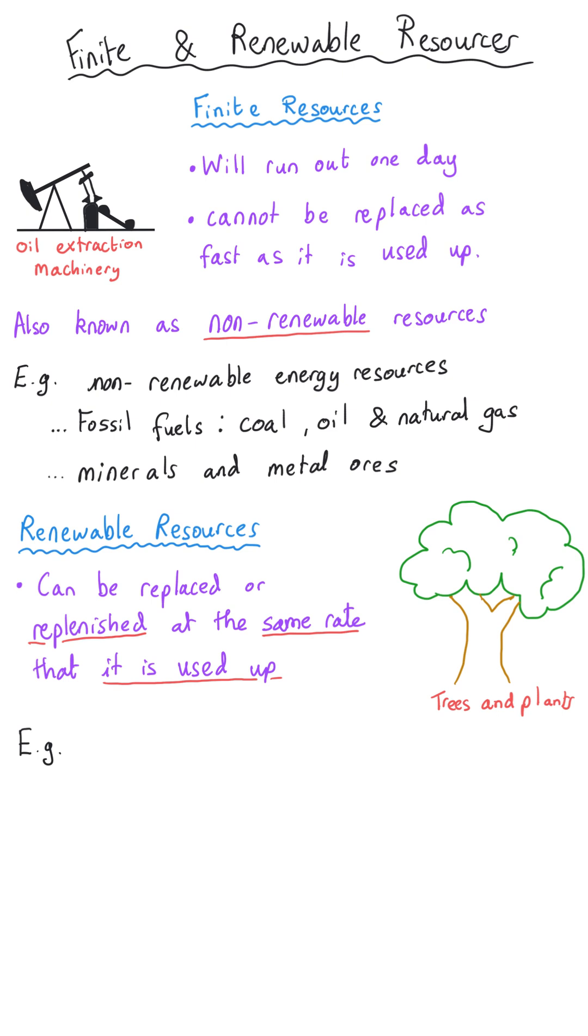An example of this might be wood that you could use as a fuel but also something such as a crop or some sustainably caught fish.